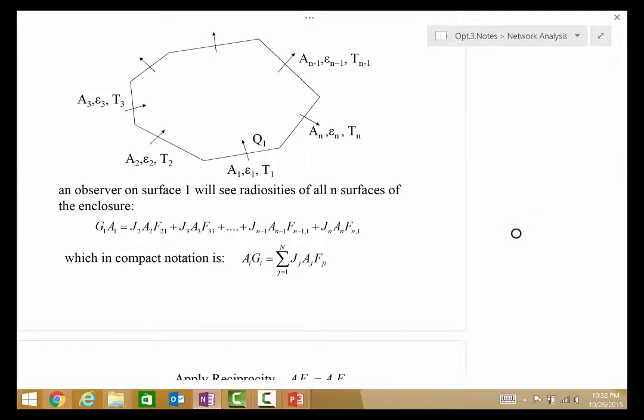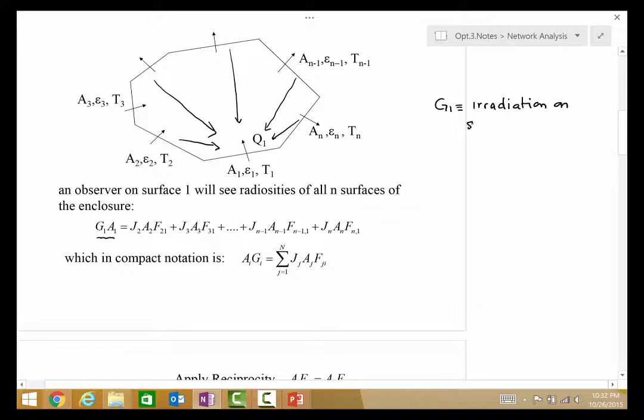Imagine an observer on surface 1 who sees radiosities of all the n surfaces of the enclosure. You're sitting here on surface 1, you get radiation from surface n minus 1, surface n, etc. So, your incident radiation, G1A1, G1 is the irradiation on surface 1.